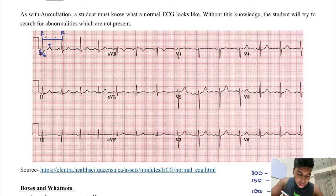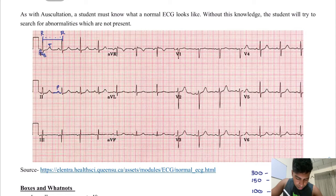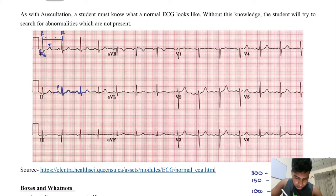Next, rhythm — you check to see if there is a sinus wave, meaning you check to see if there is a P wave. And finally, the shape: you follow the wave — P, Q, R, S, T. You can see P, Q, R, S, T are all there. All three rules satisfy a normal ECG.